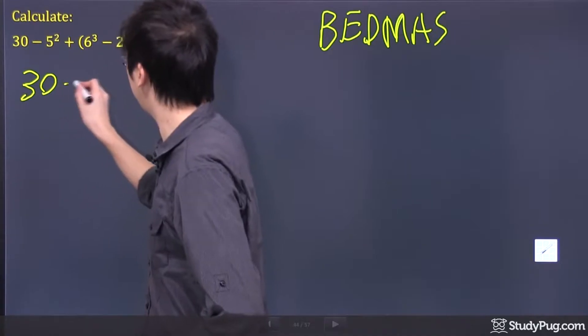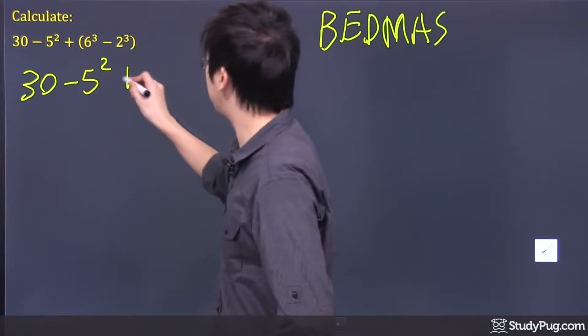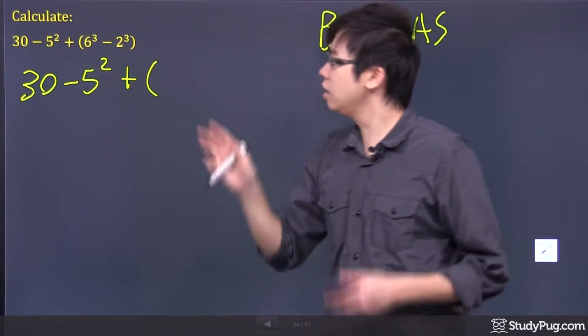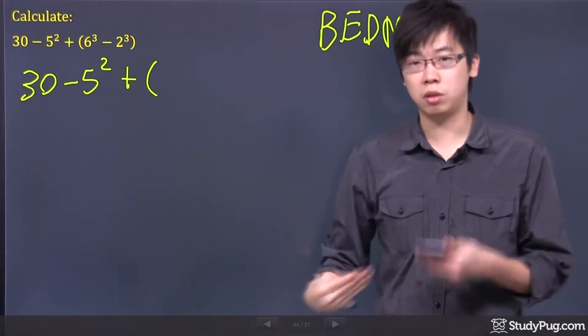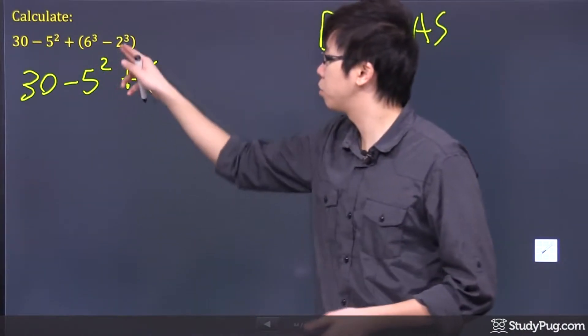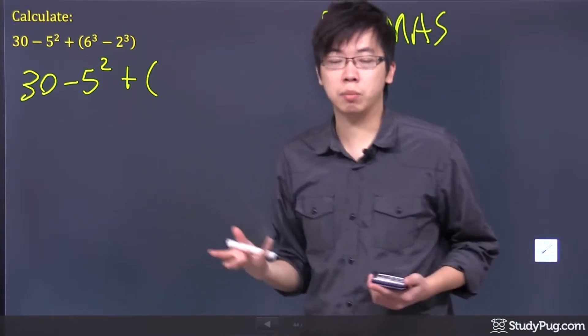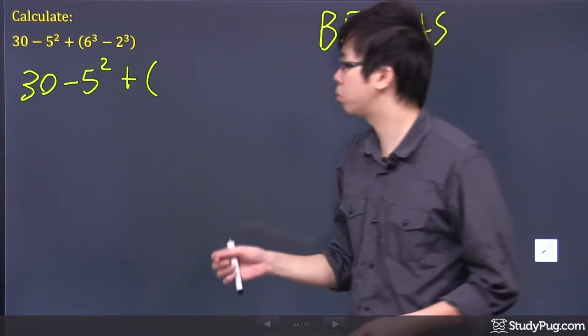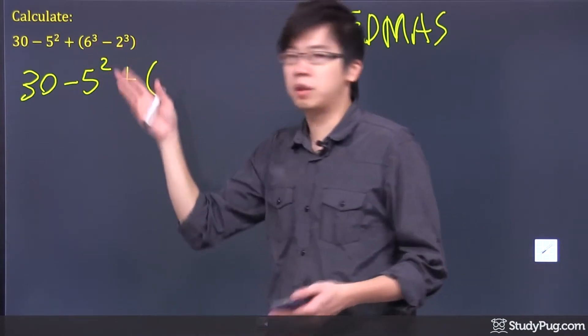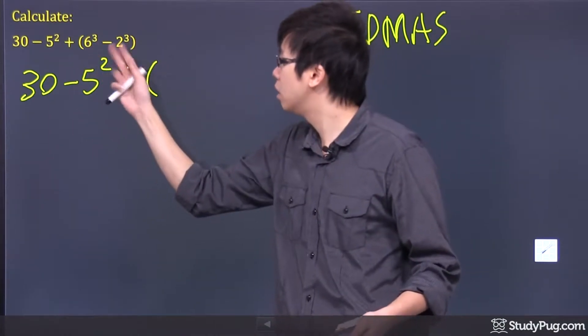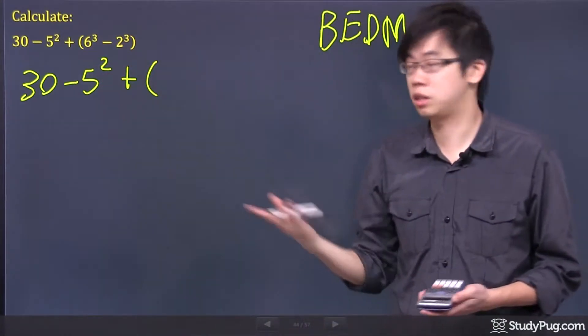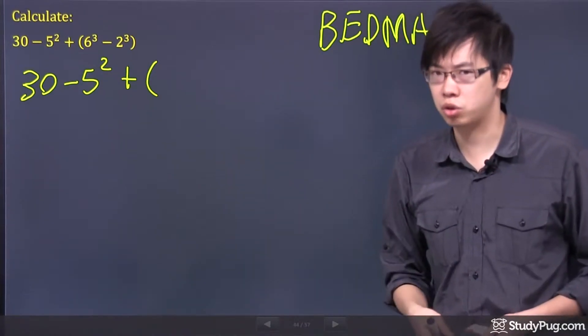So I'm going to copy down the question, 30, keep everything the same. Now, what is inside the bracket? There's a couple things that you need to figure out. I got 6 power 3 minus 2 to the power of 3. Now, don't be tempted to add exponents or subtract exponents. You have to double check. Well, first of all, the base is different between these two guys, and it's subtracting. So you can't really do any shortcut, actually.